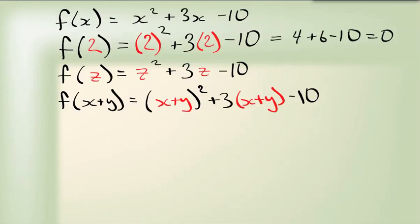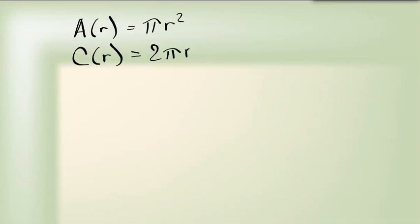Now up to now, I've only been using f for functions. But functions can use other letters as well. I can name them. I can say the area of the circle with respect to the radius. Now that one we all know is pi r squared. I can say the circumference of the circle, also with respect to the radius, is 2 pi r.